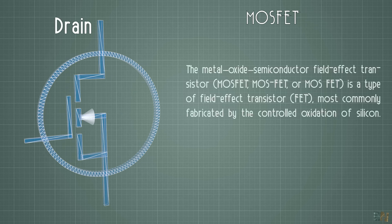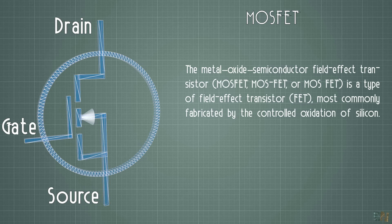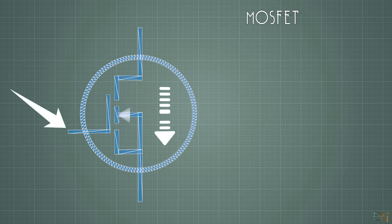For the MOSFET, we have the drain, the source and the gate. In the same way, current could flow between the drain and the source and that is controlled by the signal applied to the gate.